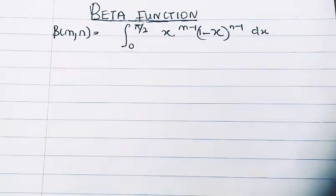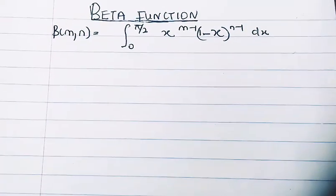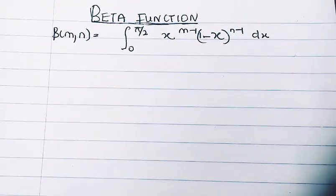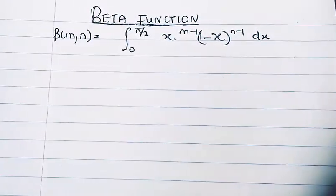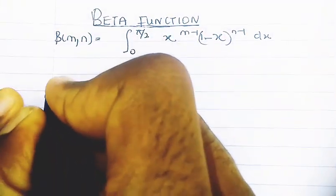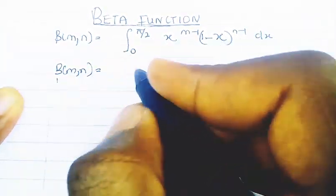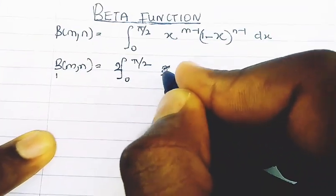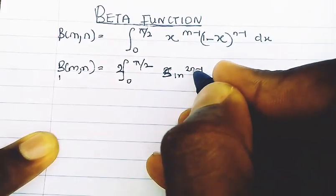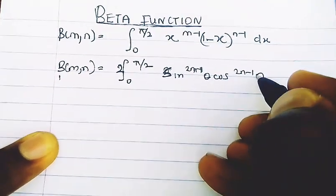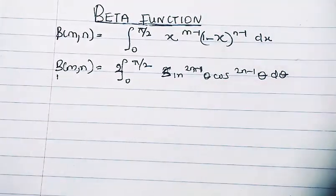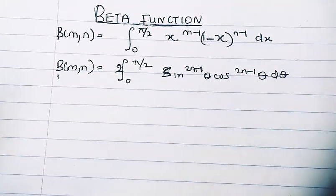Welcome back to my YouTube channel. We are going to be looking at another lesson on beta function. In our previous video, we made note of two formulas: the general representation of the beta function, and we derived a second formula — I call it the trig form of the beta function — which is the integral from zero to pi/2 of sine^(2m-1)(theta) cos^(2n-1)(theta) d-theta. If you have not watched the previous video, I'll drop the link up here.